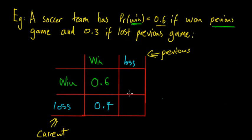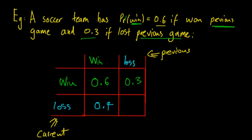If they've lost previously, we're still talking about the win, so that's 0.3. If they've lost the previous game, the chance of winning is 0.3. The chance of losing if they've previously lost is 0.7. So you sub those values in.